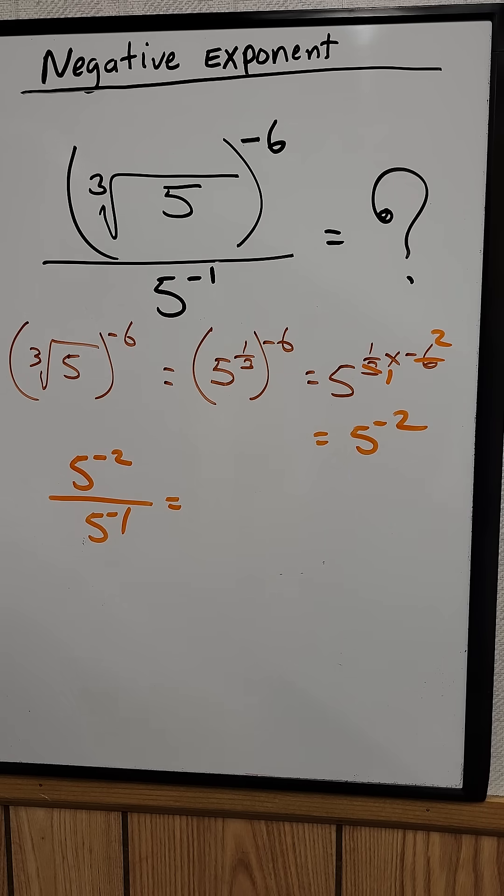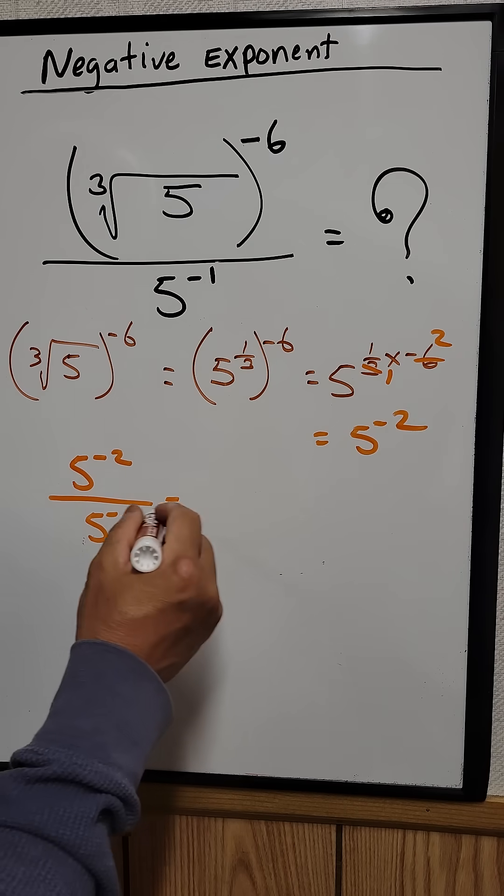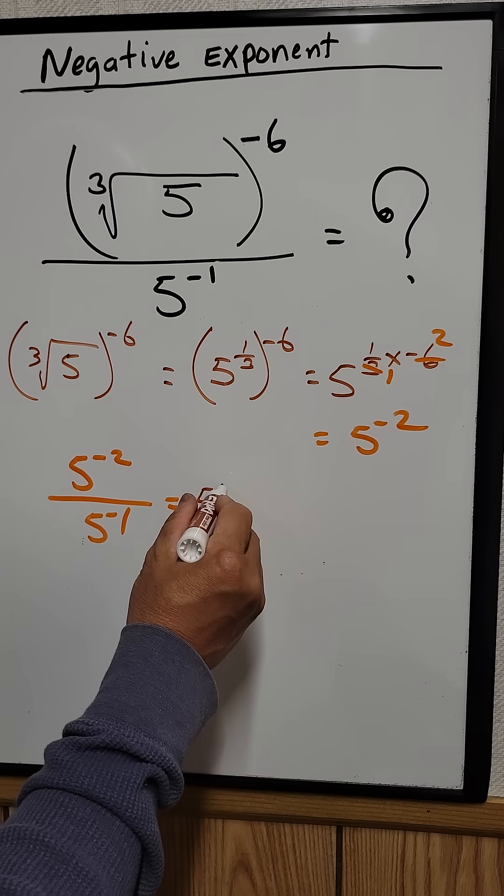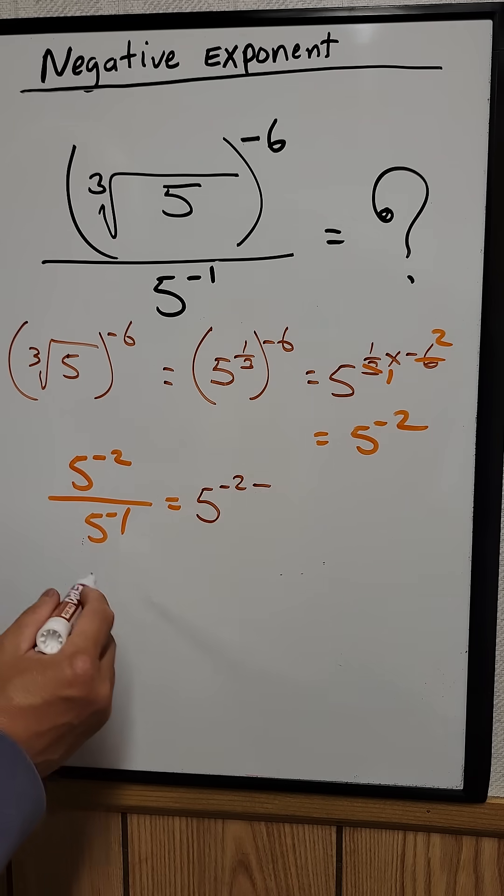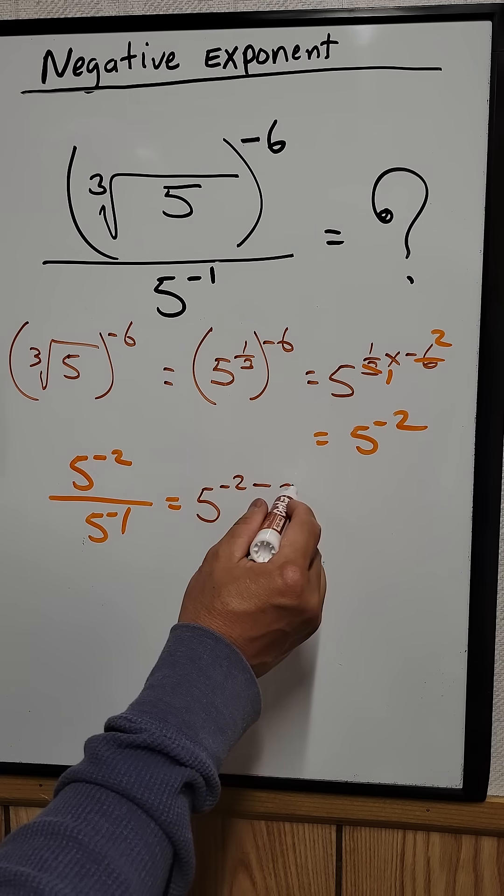So since the basis is the same, all you need to do is just subtract the exponent. So this becomes 5 raised to the negative 2 minus, and then don't forget this minus sign, minus 1.